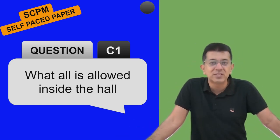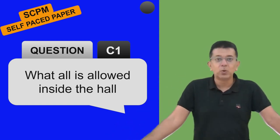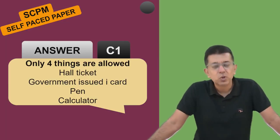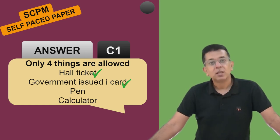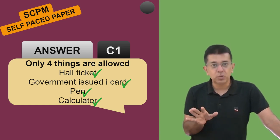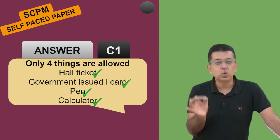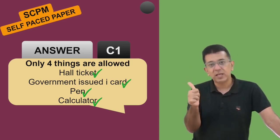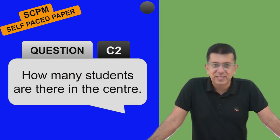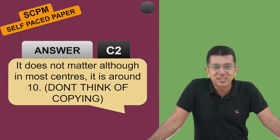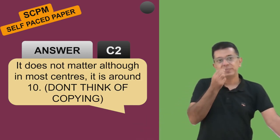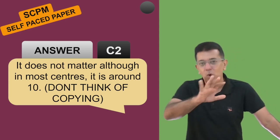What is allowed inside the hall? Four things are allowed: your hall ticket, your government-issued ID card, your pen, and a calculator. You are not allowed any notebook. Nothing else is allowed - you only go with your knowledge. No textbook, no notebook, just your calculator and pen. Regarding how many students are in the center - it doesn't really matter since one computer is given to one student, but typically around 10 students are in each center.